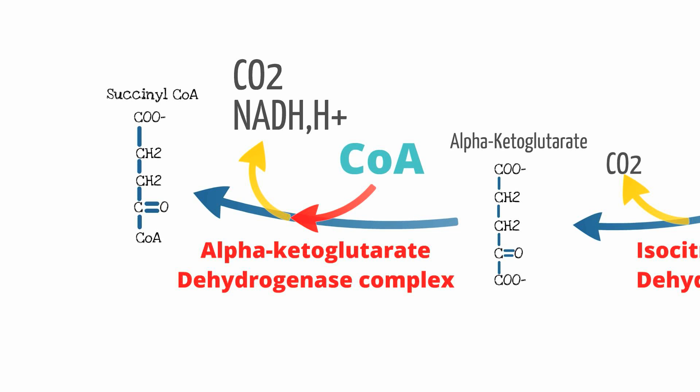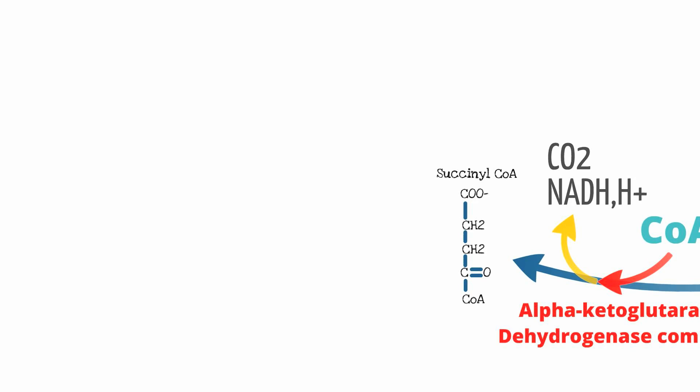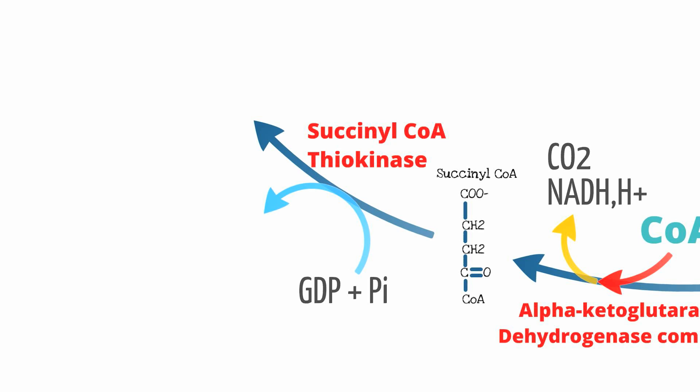The alpha-ketoglutarate dehydrogenase complex is inhibited by ATP, GTP, NADH, and succinyl-CoA, and is activated by calcium. If your muscles contract, they release calcium, causing the Krebs Cycle to increase activity to provide enough energy for the muscle cells. An important point is that succinyl-CoA is also a product of odd-chain fatty acid metabolism, as well as metabolism of some amino acids — alternate ways cells can produce energy without using glucose to form pyruvate.